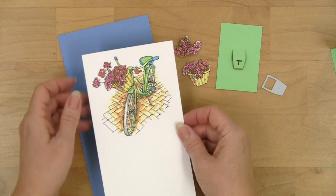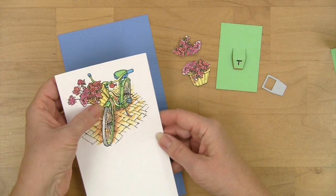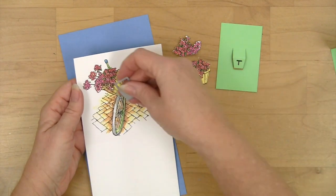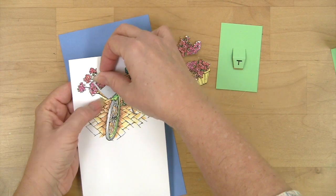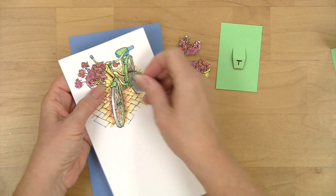With this one I love the little bike and decided to just do a simple pop-up using the tab. So I turned the tab at an angle like this that fits up here in the basket area and I've